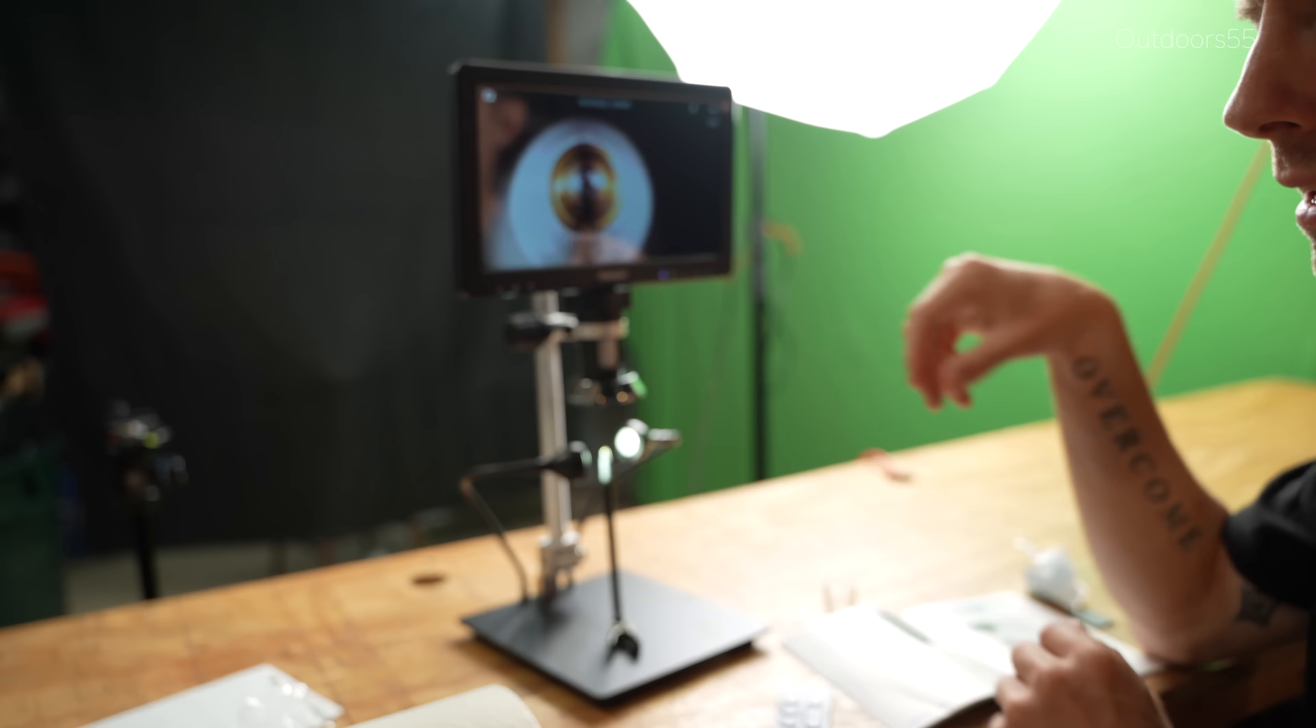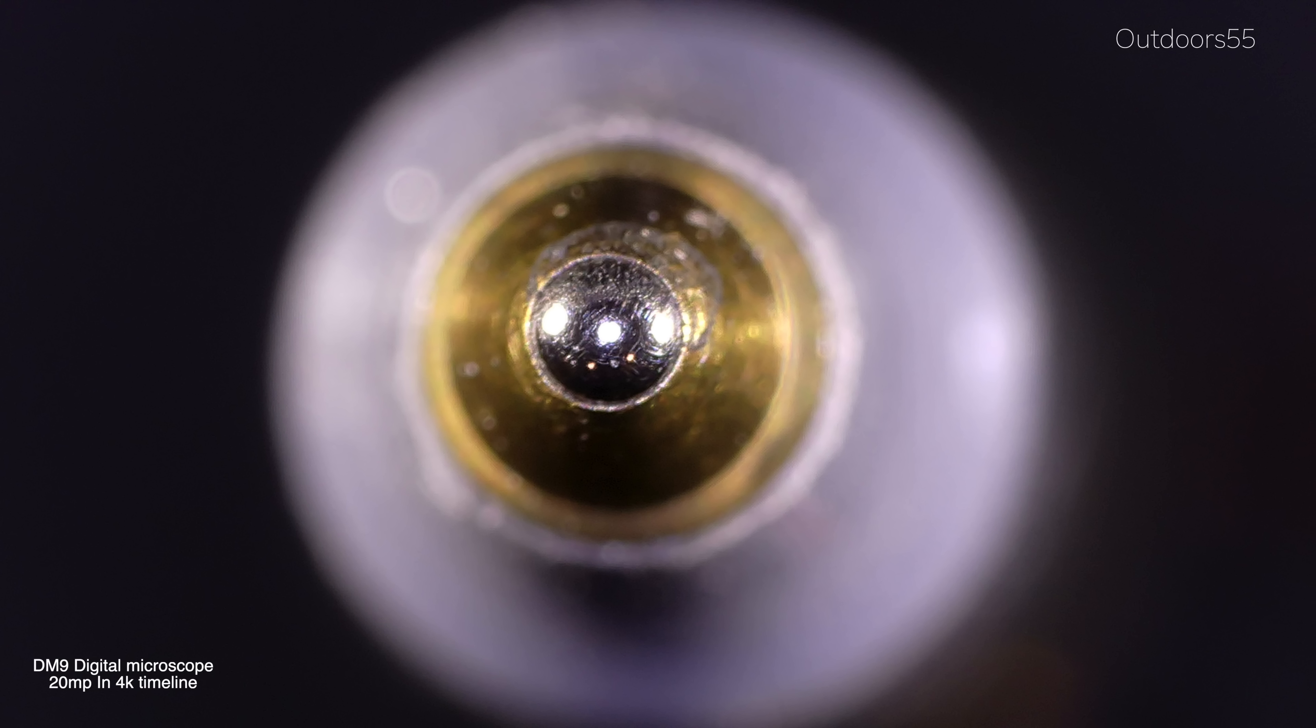So first off right out of the gate, this is a picture of our pen as close as this microscope will focus. And this is on the 20 megapixel camera setting. Basically, this is right out of the box what you're going to get, which is not great, but I will show you how to get better results in a second.